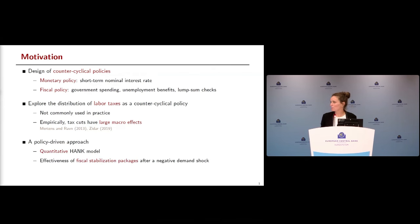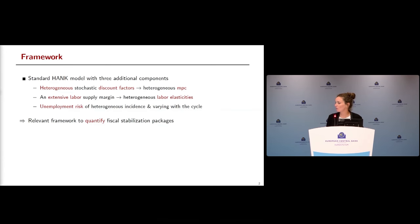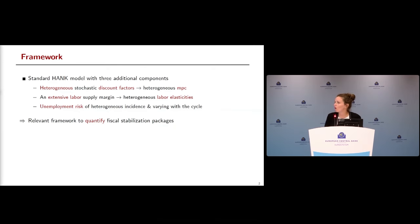We adopt a policy-driven approach and build a HANK model to quantify the effectiveness of various fiscal stabilization packages, including one using labor taxes. The model has three additional features: first, heterogeneous stochastic discount factors generating a distribution of marginal propensity to consume and heterogeneous consumption responses; second, endogenous labor supply at the extensive margin generating a distribution of labor elasticities and heterogeneous labor responses; and third, unemployment risk with heterogeneous incidence across the household distribution, varying with the cycle.